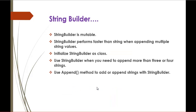StringBuilder is mutable — it overcomes the immutability disadvantage of string. StringBuilder also performs faster than string when appending multiple string values. To understand this, we will jump into coding to see how to initialize StringBuilder. StringBuilder should be initialized as a class. We will cover what a class is in upcoming sessions, but for now we'll use it to append more than three or four strings at a time using the append method.